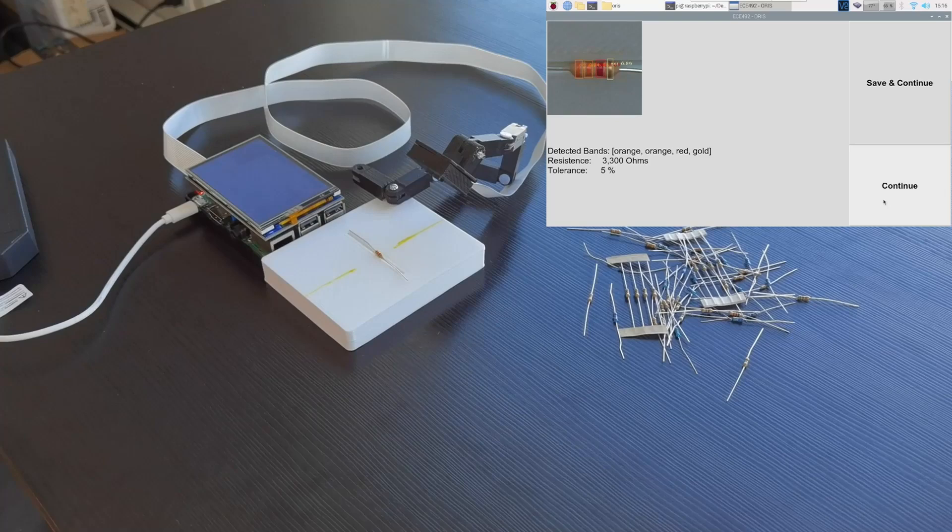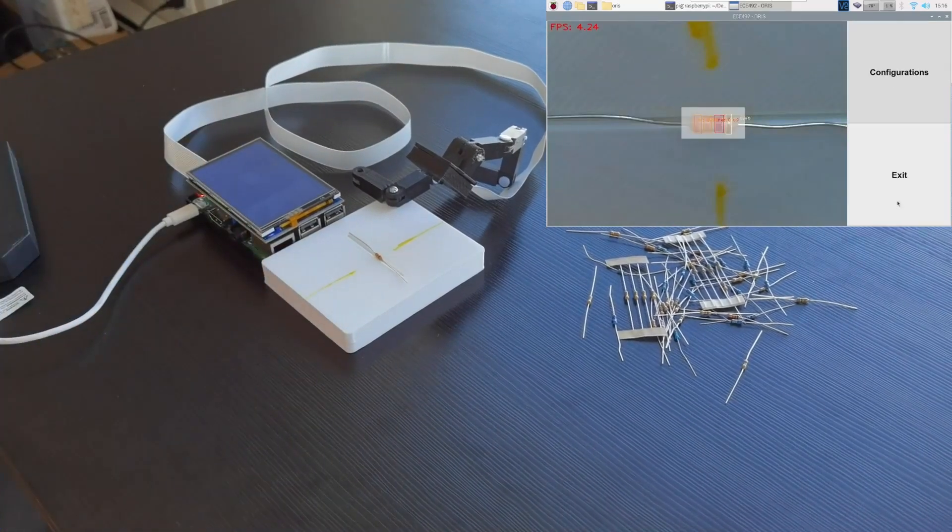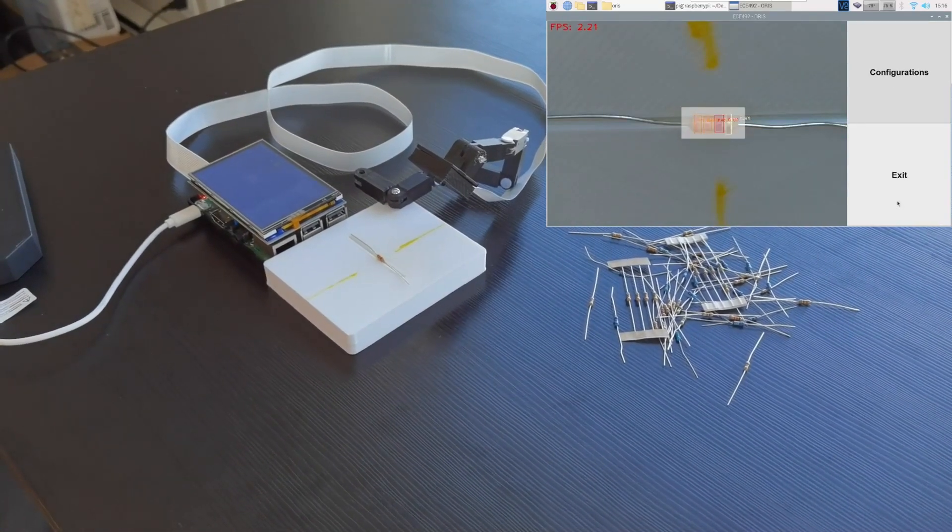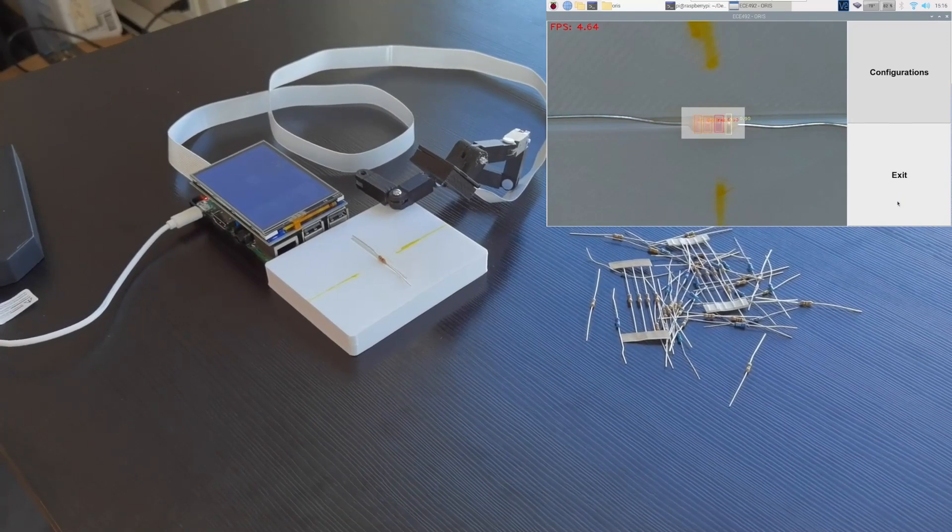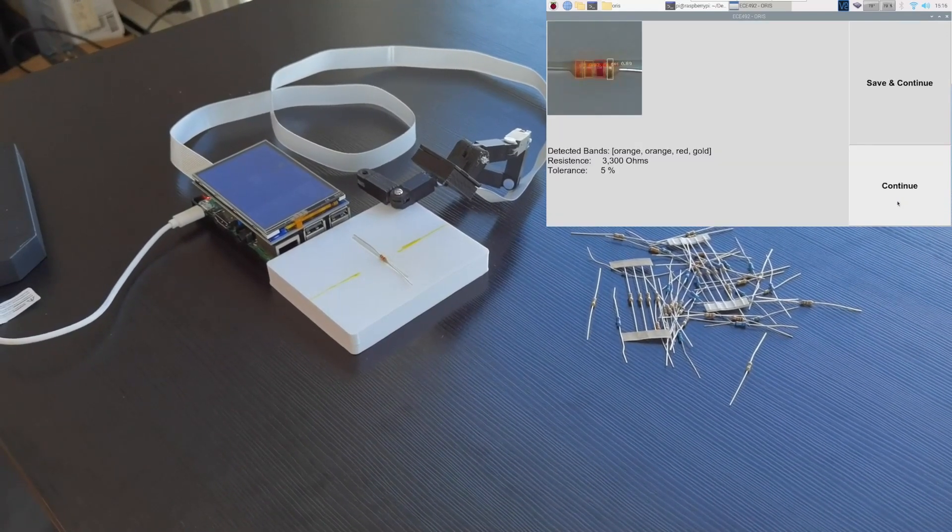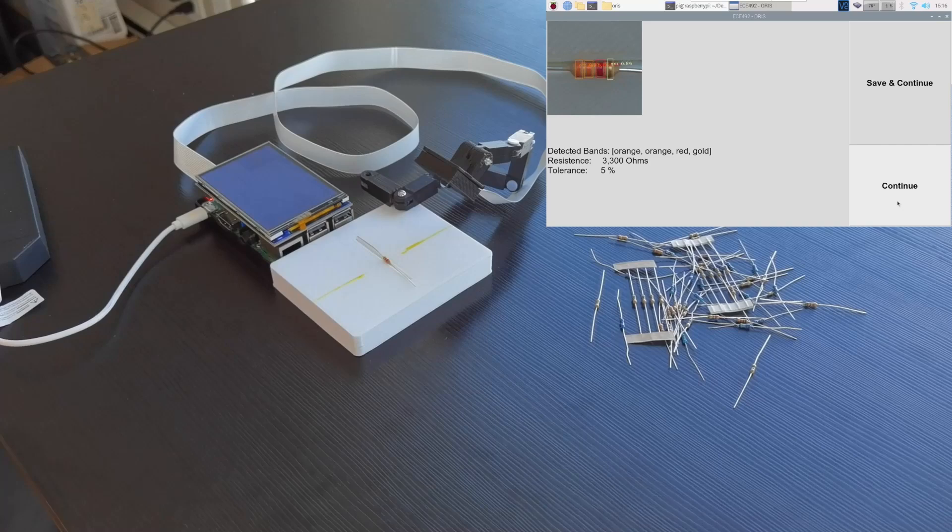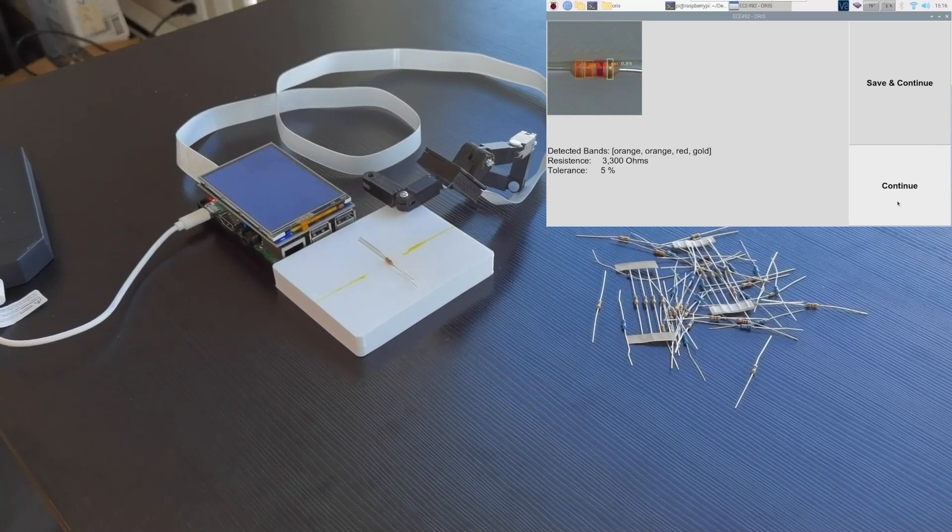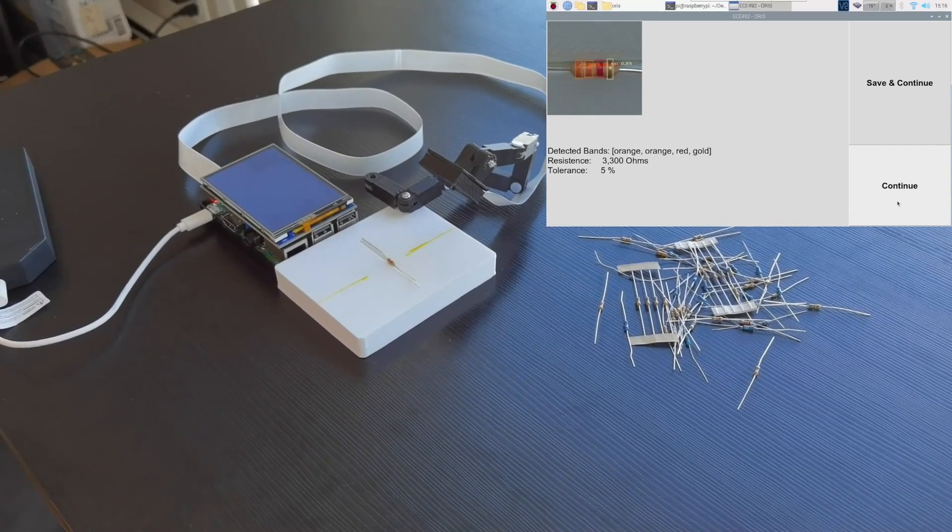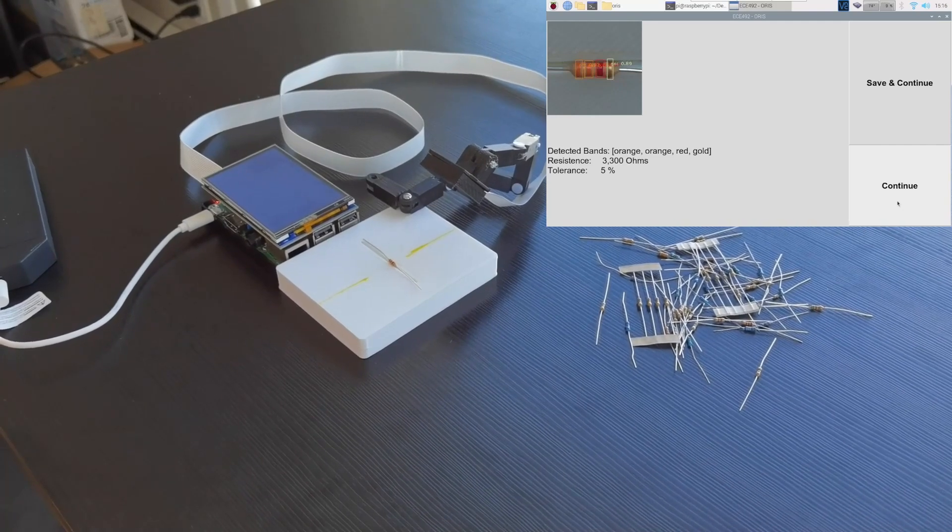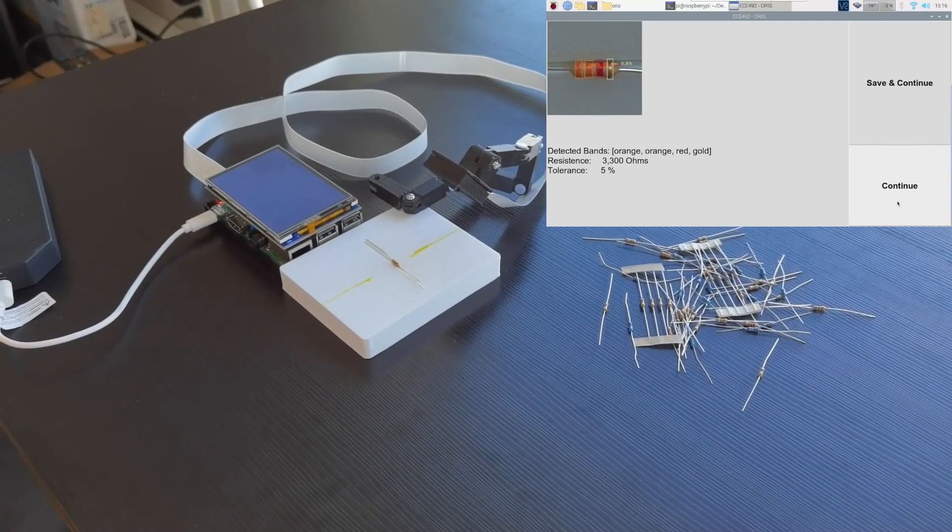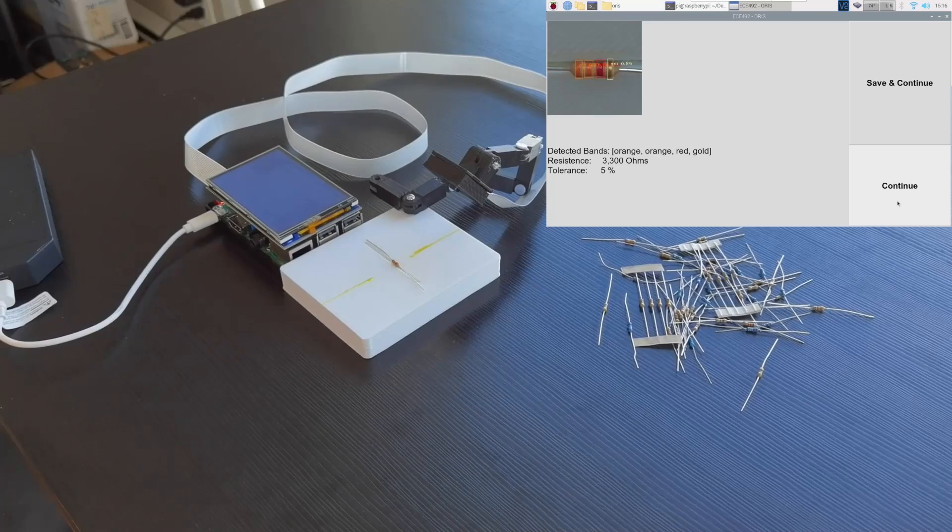The detection may cost a second to a couple seconds. During the detection, we can see the live detection result on the screen which will show the detected color band and their detection score. After the ORIS successfully identified the resistor, it will display the result page, which includes what it sees for each color band, the resistance, and the tolerance of the given resistor.